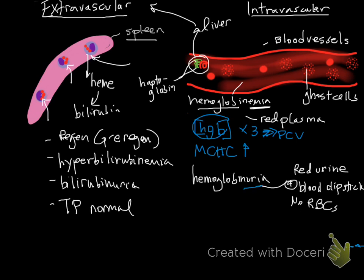Hemoglobinuria, how it's identified, is going to be red urine with a positive blood dipstick and no actual red cells on our sediment. So it's not hematuria. There's pigment, and it's hemoglobin. That's the main differences between extra- and intravascular hemolysis. Next, we'll talk about the first cause of hemolysis, which is oxidative injury. That's the next video.